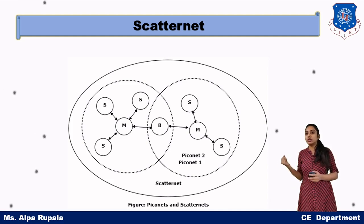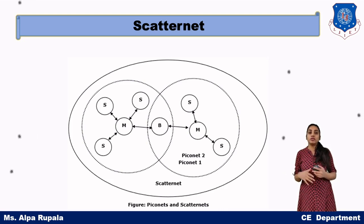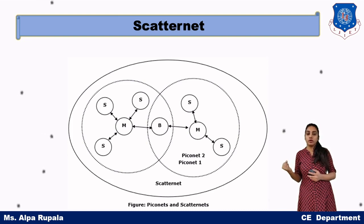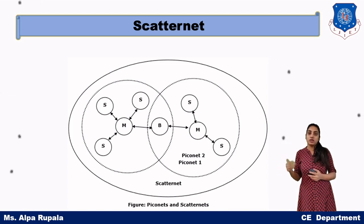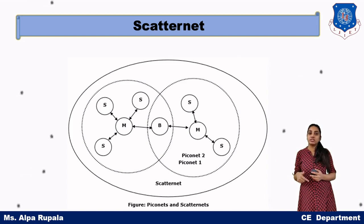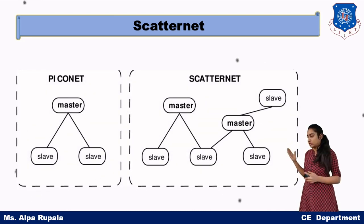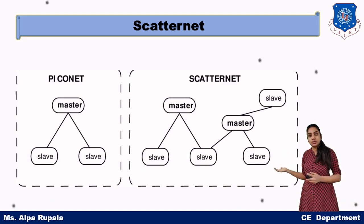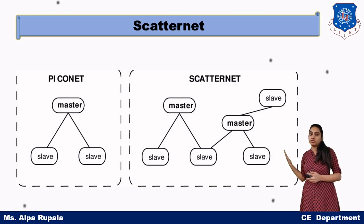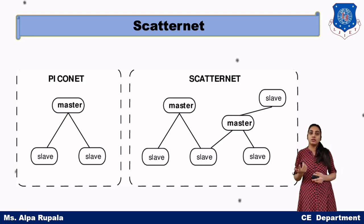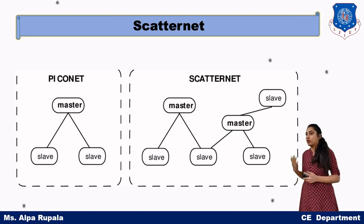How can we say whether the combined slave is part of Piconet 1 or Piconet 2? Whenever the combined slave wants to communicate with Piconet 1, it will synchronize the hopping sequence according to the master of Piconet 1. If this slave wants to communicate with the Piconet 2 master, then it needs to change the synchronization or hopping sequence according to Piconet 2. So this is the whole fundamental of Piconet and Scatternet. The Piconet has a master and slaves; the Scatternet has different Piconets each with a master, and there will be one combined slave common to both or more Piconets.